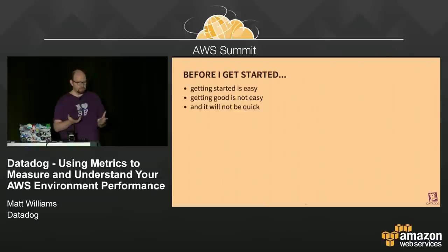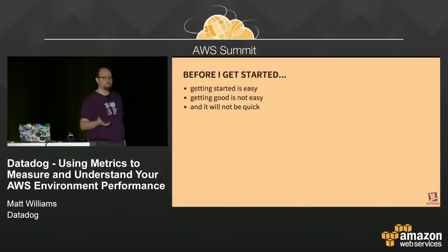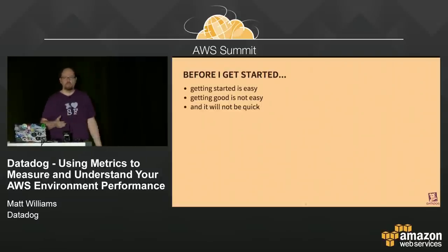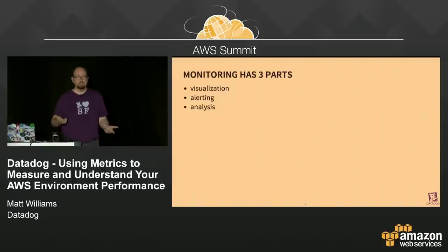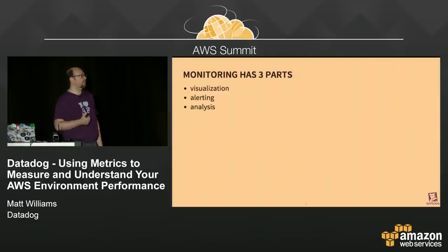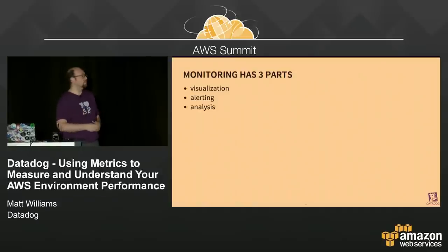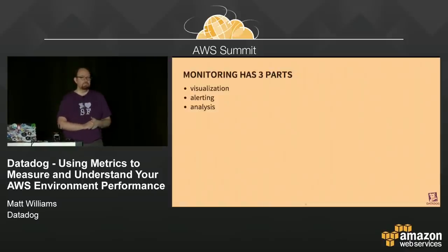The reason I keep talking about what is normal is that we want to eventually come up with some alerts that help you get alerted when there is a problem. In order to be alerted when there's a problem, you need to know what normal is. One of our customers, AdRoll — mentioned by Brian Troutwine — talks about monitoring having three parts: visualization, alerting, and analysis.